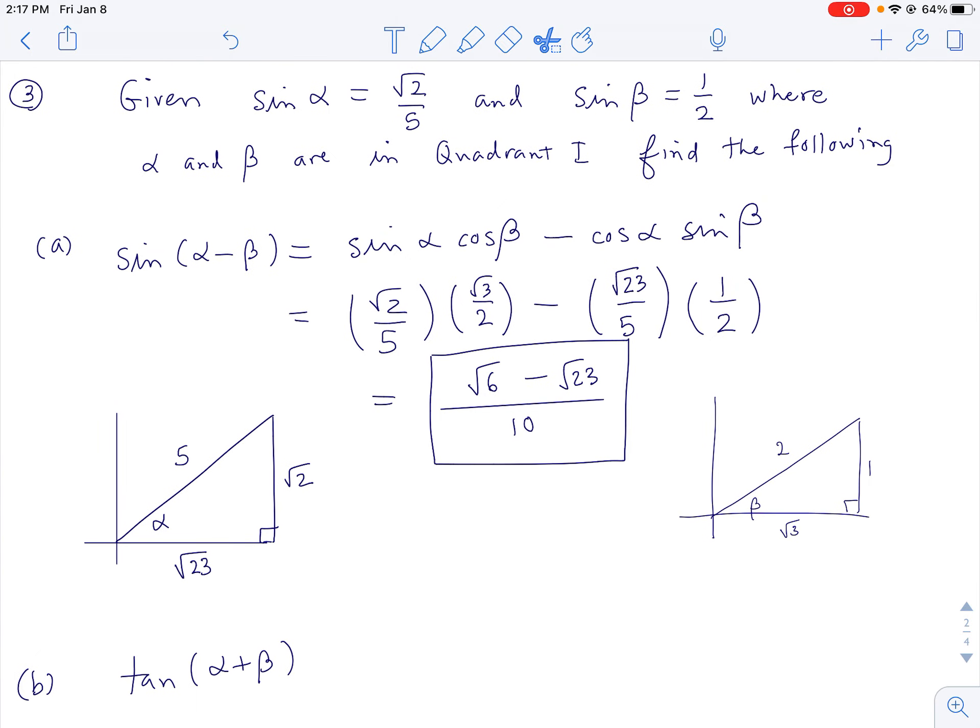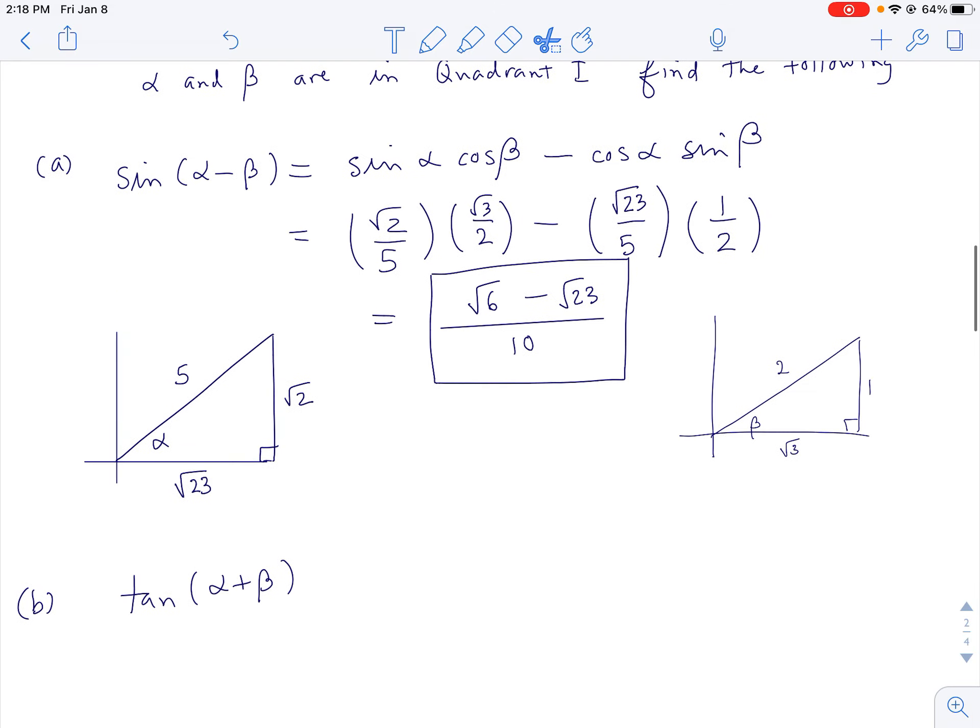Now guess what? Sine of alpha is root 2 over 5, we already did that reference triangle. And sine beta equals 1 half, we already did that reference triangle in the previous video, the previous problem.